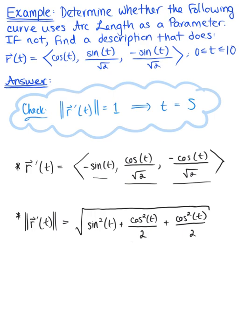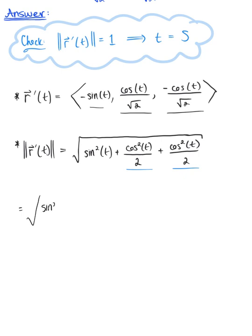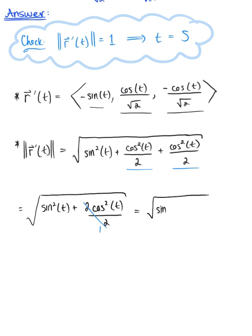Looking within this radicand, we realize we have two like terms that we can combine. This simplifies to the square root of sine of t squared plus 2 cosine of t squared divided by 2. The 2 in the numerator cancels with the 2 in the denominator, leaving us with the square root of sine of t squared plus cosine of t squared. We recognize that is the Pythagorean identity, which of course equals 1.